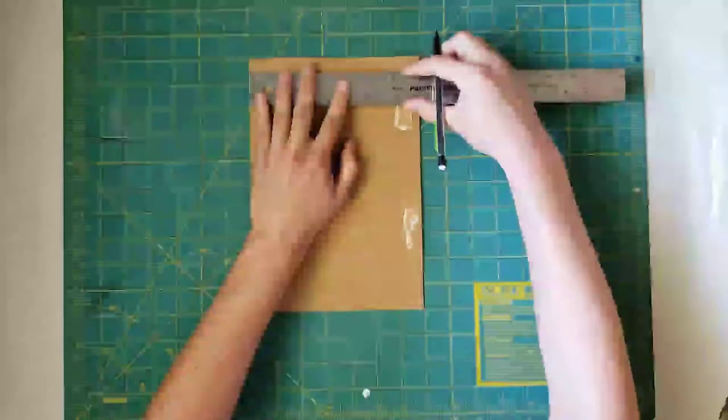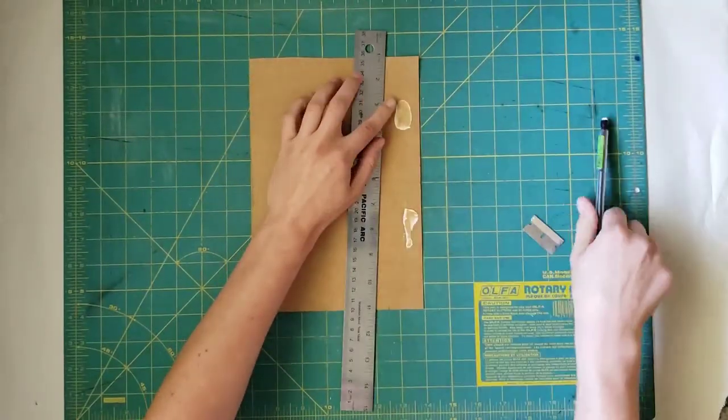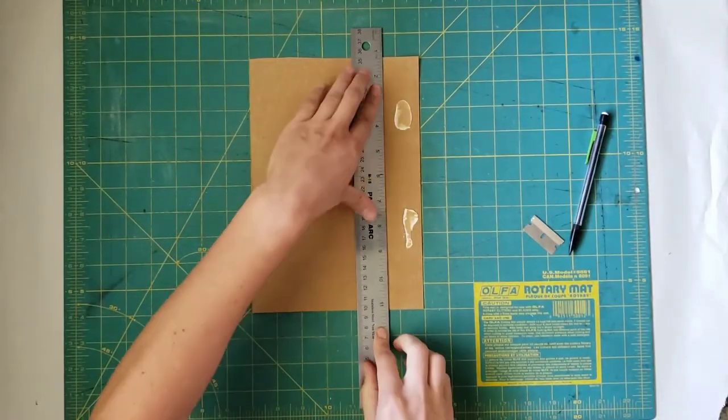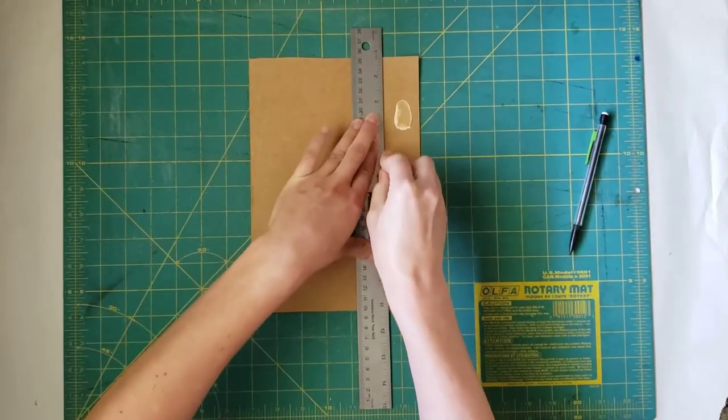Begin by cutting a square that measures seven inches high and five and a half inches wide. You can use the ruler as a straight edge.